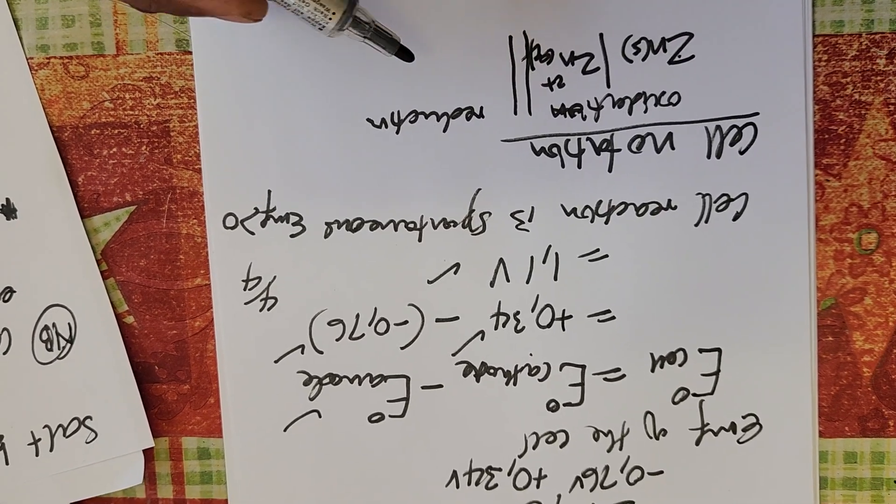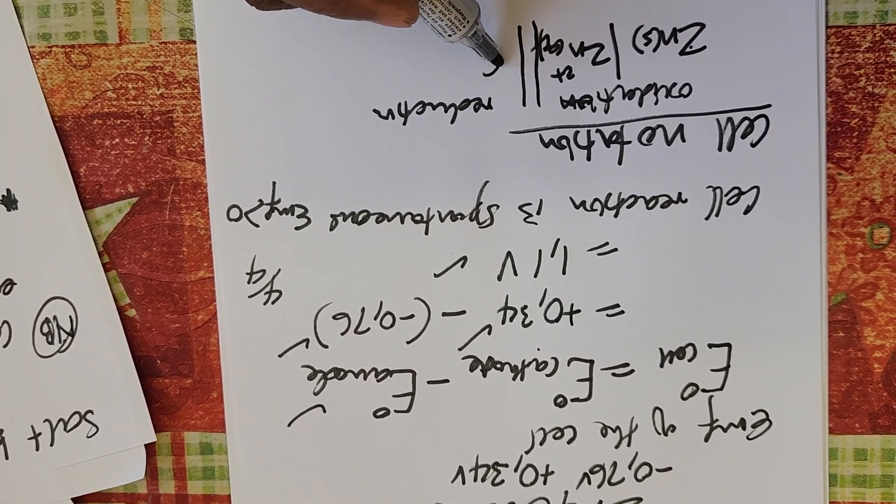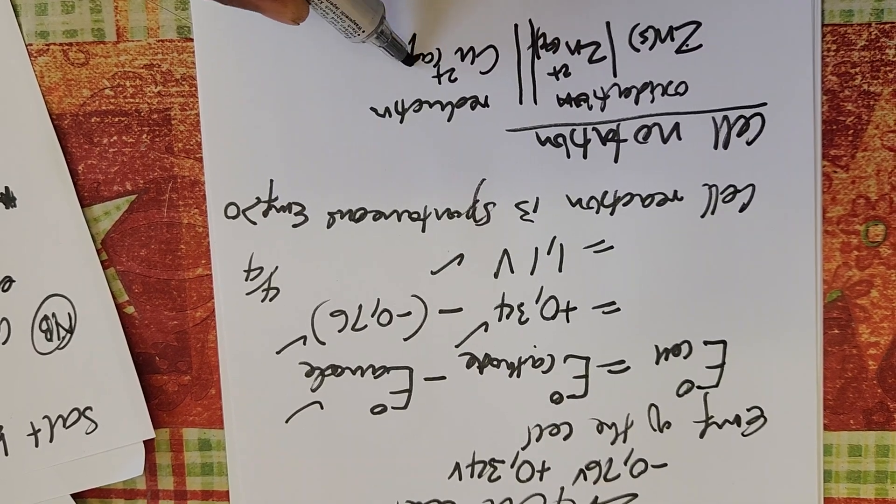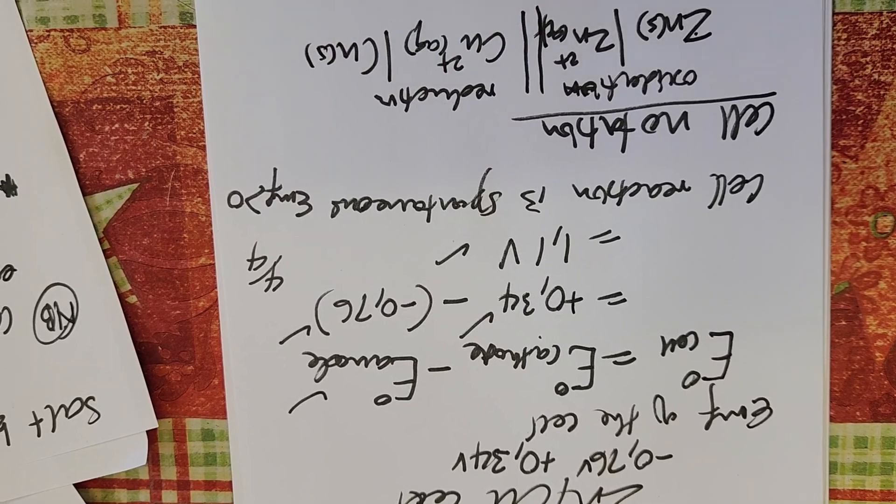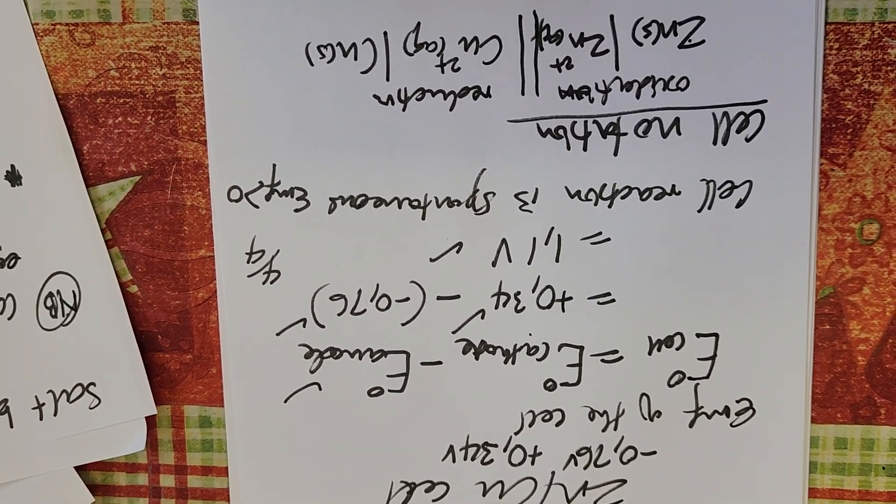Whereas the reduction involves the copper half-cell, therefore copper ions in solution will be changing to form copper solid.